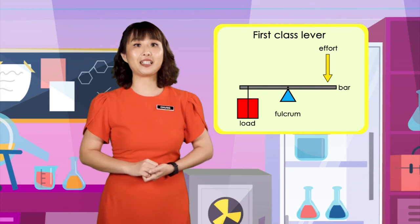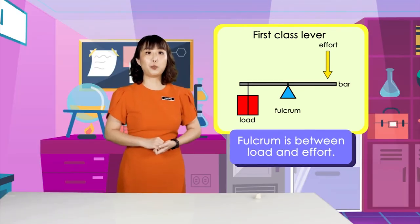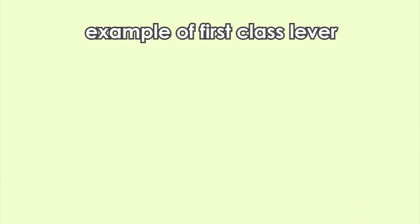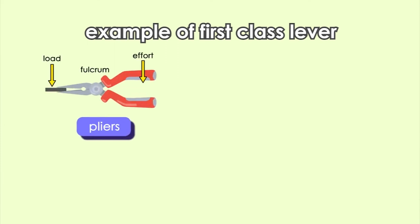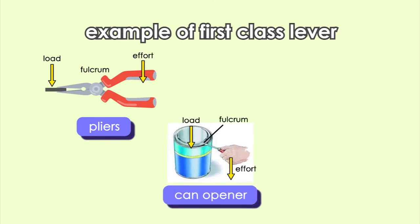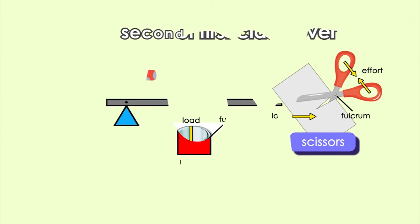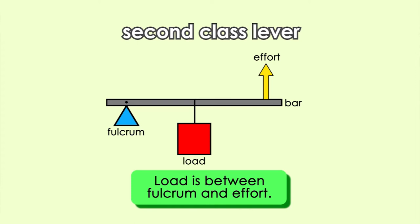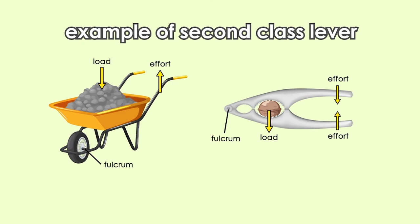Now, let us discuss the classification of levers. This is a first-class lever. The fulcrum is between load and effort. And these are examples of the first-class lever. If you see that the load is in between the fulcrum and effort, then this is a second-class lever. From this diagram, we can notice that the load is in between the fulcrum and effort.